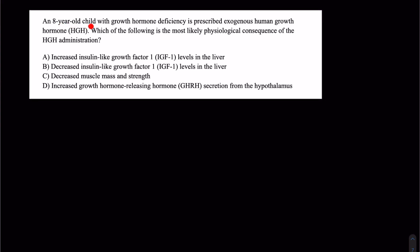Let's wrap up with this last practice question. An eight-year-old child with growth hormone deficiency is prescribed exogenous human growth hormone or HGH. Which of the following is the most likely physiological consequence of the HGH administration? We have to know our axis. Growth hormone releasing hormone from the hypothalamus stimulates the secretion of growth hormone from the anterior pituitary, which acts on the liver to create IGF-1 or insulin-like growth factor 1. We're going to increase the amount of insulin-like growth factor 1 in the liver. C is the opposite—decreasing muscle mass and strength would be a consequence of low growth hormone. D is also the opposite. Increased growth hormone releasing hormone is what we would have if we had low levels of growth hormone.